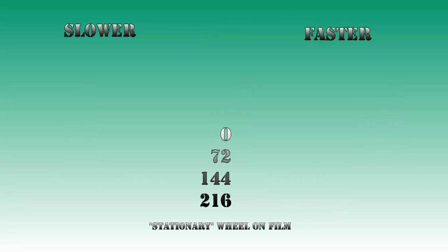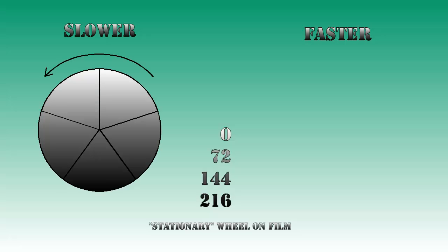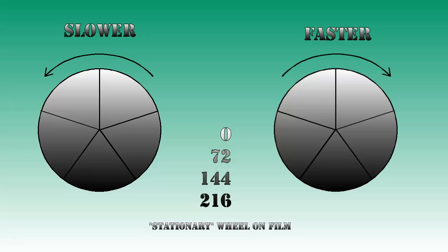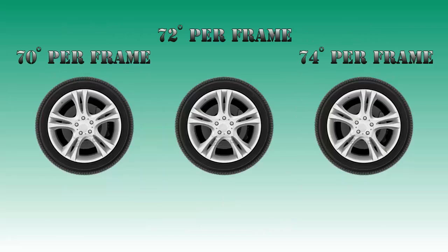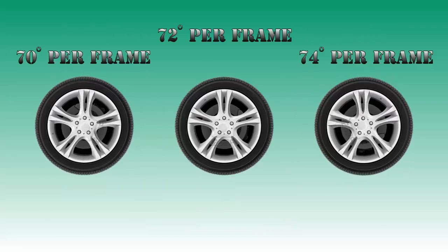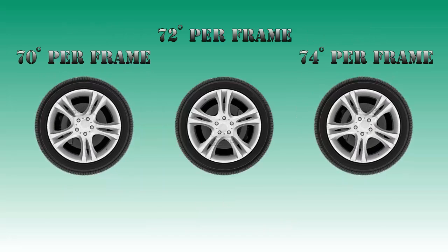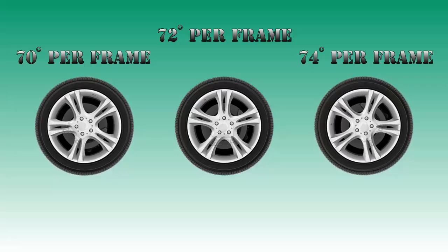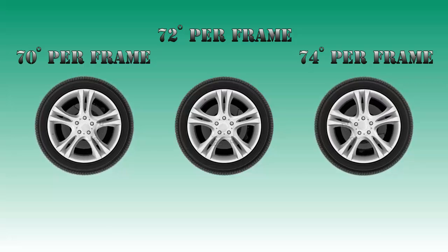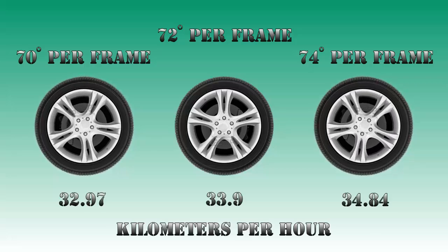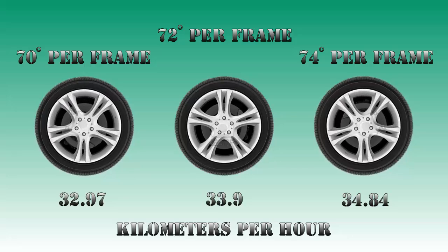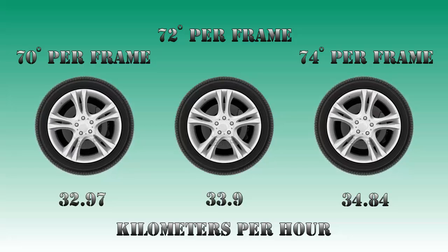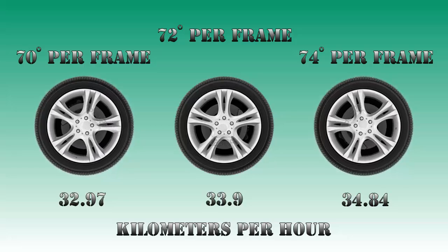So if the car moves a little slower than these speeds, the wheel will appear to rotate backwards. As an example, here are 70, 72, and 74 degrees of rotation in 1/30th of a second — corresponding to 32.97, 33.9, and 34.84 kilometers per hour respectively.